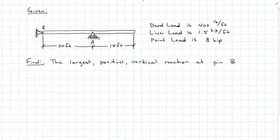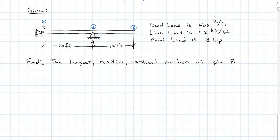Let's say we are given this beam that has a pin at B and a roller at A. We're also told that the dead load for the system is 400 pounds per foot, the live load is 1.5 kilopounds per foot, and there's a point load that is 8 kilopounds. Find the largest positive vertical reaction for pin B. We're going to start by solving for the influence line of pin B by applying a unit load at pin B, at roller A, and at the free end. There's nothing that's going to cause a change in our support between those points, so we can just use these three points.